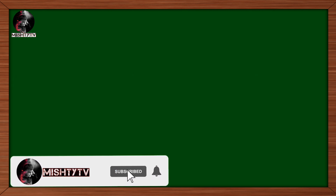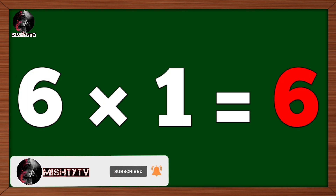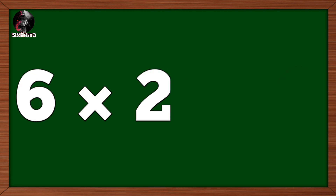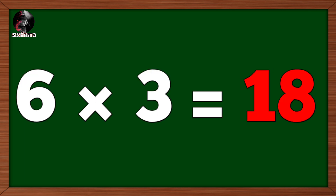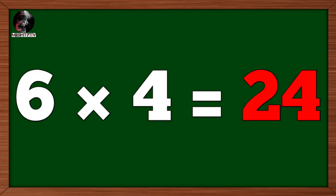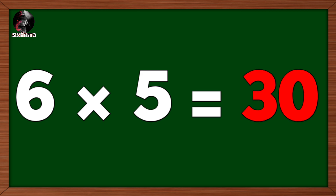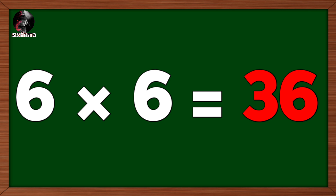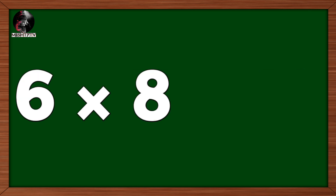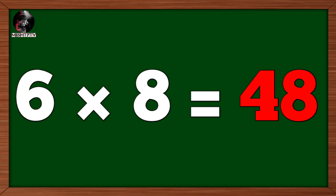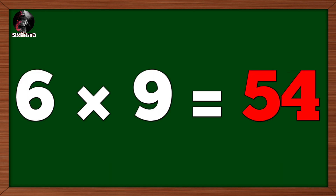Table of six. Six one's are six. Six two's are twelve. Six three's are eighteen. Six four's are twenty-four. Six five's are thirty. Six six's are thirty-six.